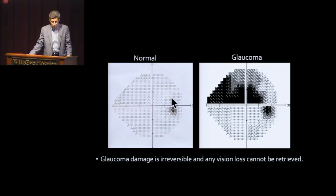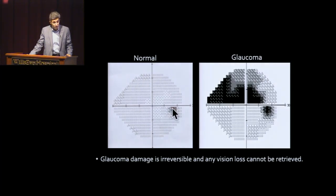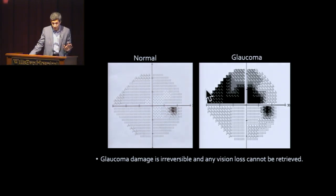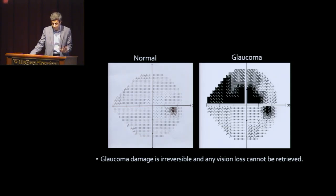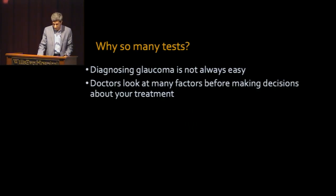As Dr. Lee mentioned, every person has a blind spot in their normal visual field. In glaucoma patients, the peripheral part of vision is lost, and unfortunately any part of the visual field or side vision that is lost cannot be retrieved.